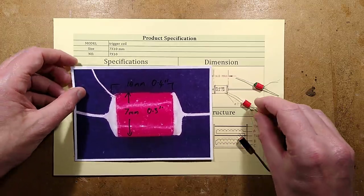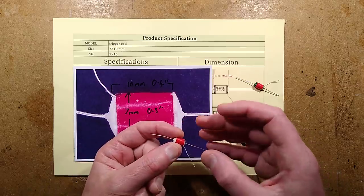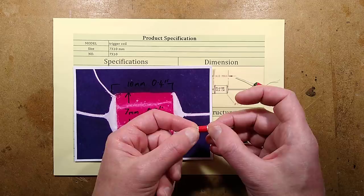So its physical size is about 7mm diameter and 10mm long, that's about 0.3 inch diameter and 0.4 of an inch long.